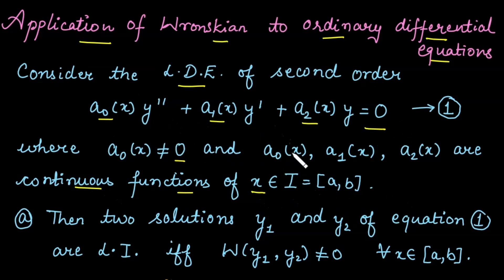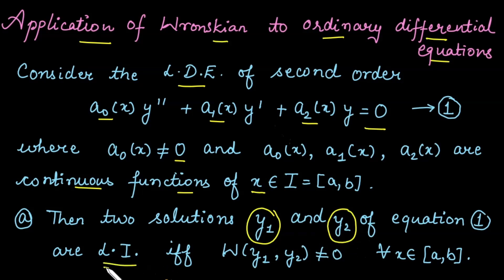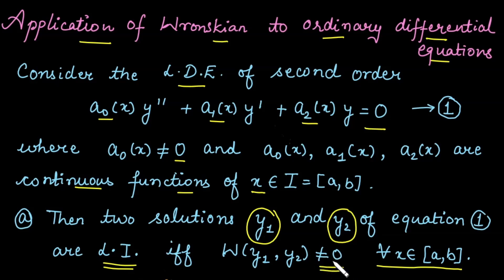Since it is a second order differential equation, it has two solutions. Suppose these two solutions are y1 and y2. These two solutions are called linearly independent if and only if their Wronskian is not equal to 0 for every value of x in the interval. This is a two-way result: if y1 and y2 are linearly independent then the Wronskian is not equal to 0, and whenever the Wronskian is not equal to 0, both solutions are linearly independent, provided the leading coefficient is not equal to 0.